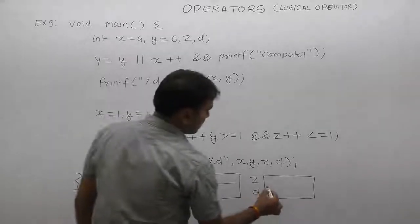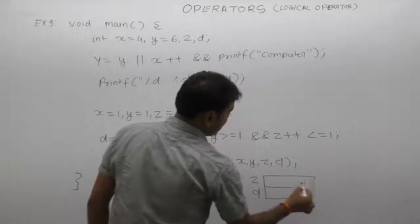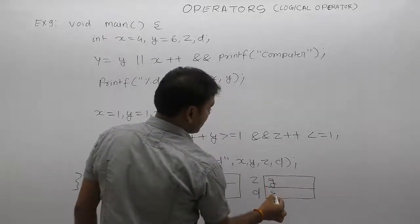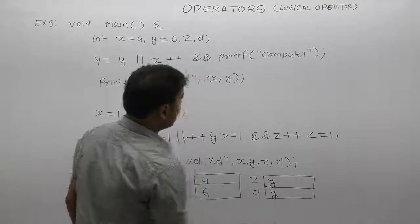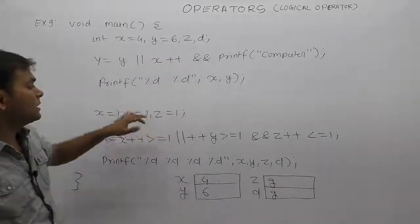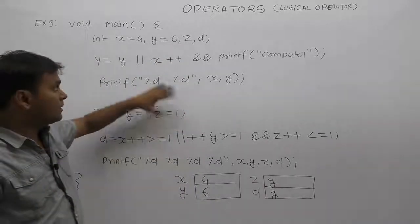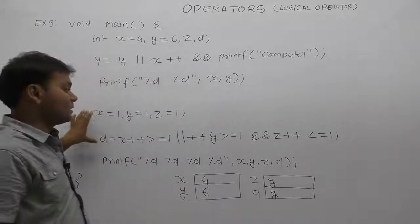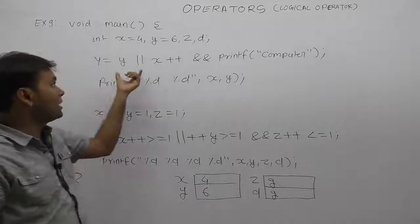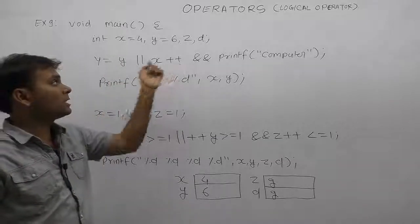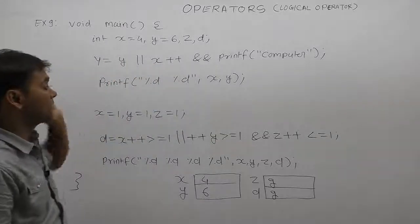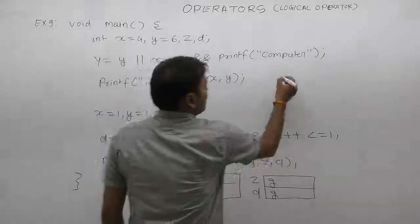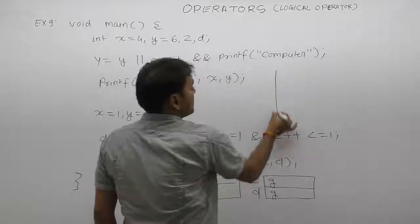What about the default value of z and d? z and d are used in the second case. This is case 1 and this is case 2. First of all we are testing only x and y combinations, and in that case we have some output on the monitor.